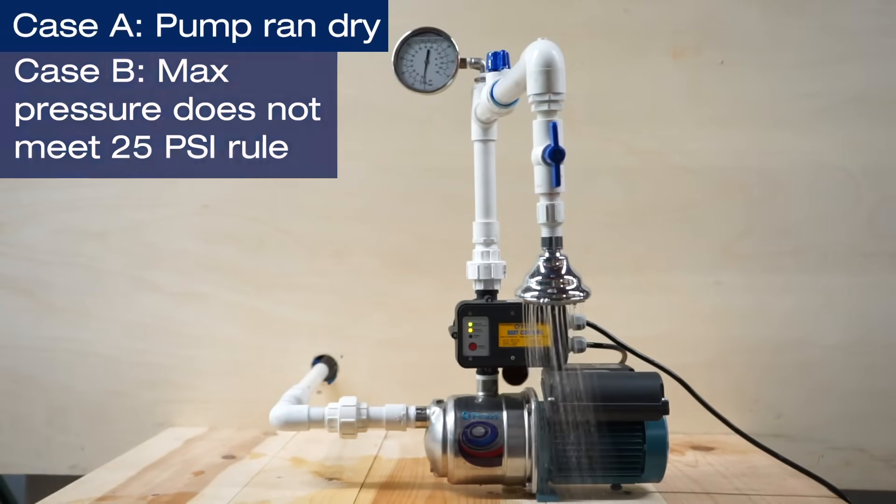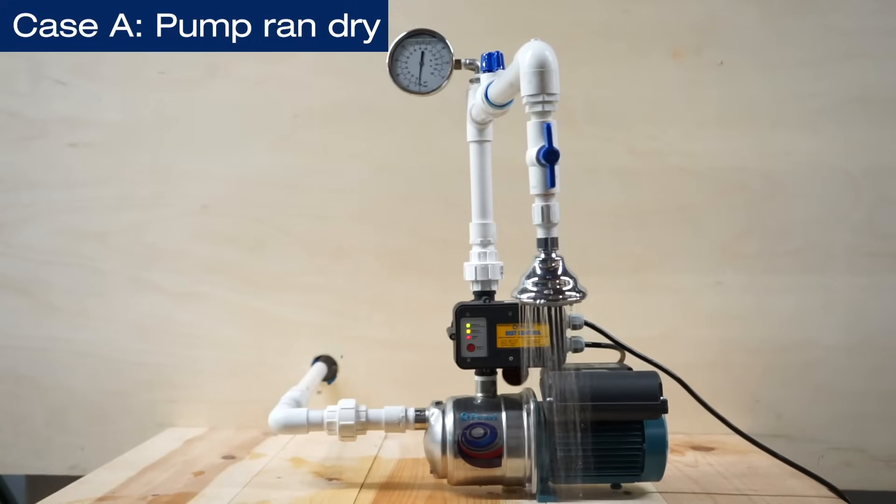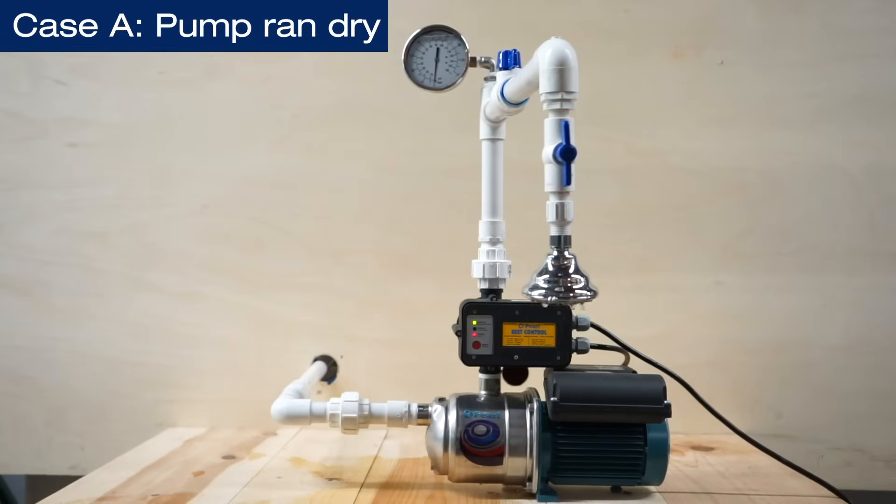In case A, if there is no water at the source, the pump will go into failure mode. Normally the pump will try to turn on automatically 5 times within 1 hour to try to resume normal operation. If there is no water available, the pump goes into failure mode.